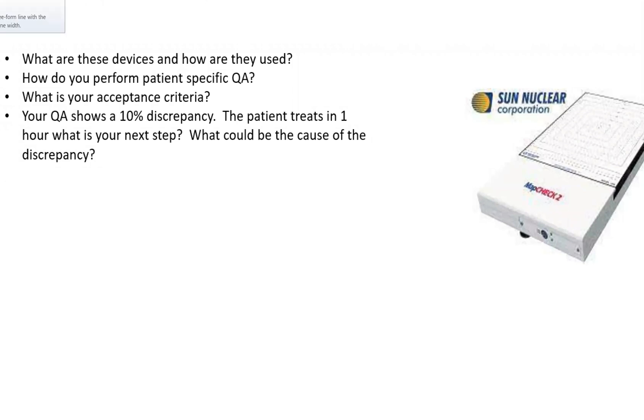RTQA and pre-treatment QA is very essential for a medical physicist. It's imperative that you not only know what to do, but you know what you do in your clinic. So let's say you have the image to the right - what is this device and how is it used? How do you perform patient-specific QA? What is your acceptance criteria? Your QA shows a 10% discrepancy. The patient treats in one hour. What is your next step and what could cause this discrepancy?